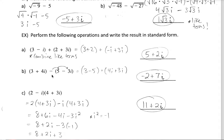To subtract, if we're subtracting multiple terms, we distribute the negative throughout. So minus the quantity 5 plus 3i becomes minus 5 and minus 3i. For the real numbers, 3 minus 5 gives negative 2. For the imaginary terms, 4i plus 3i gives 7i.